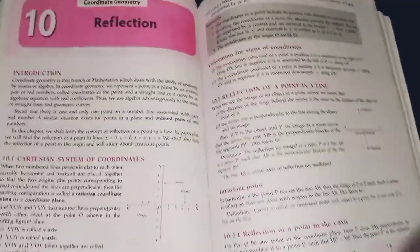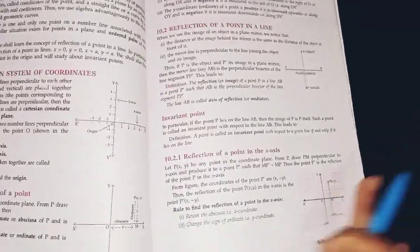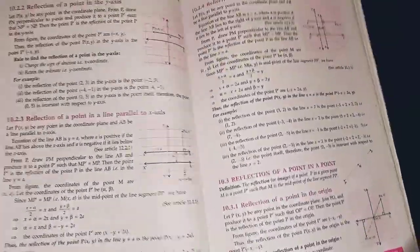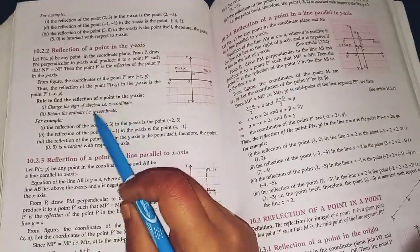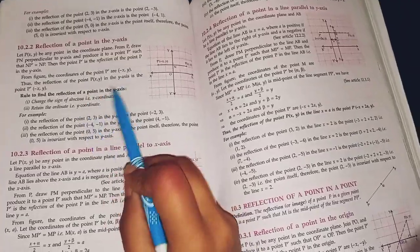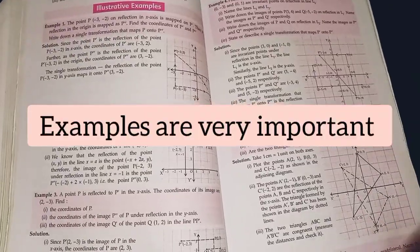Measures of central tendency will take two days and probability will hardly take one day. Now, in this part, reflection, you have to do all the topics. Everything is in syllabus and after you learn all these formulas and the rule to find reflection of point in x-axis, y-axis or origin, then you'll move on to the examples. Examples are very important. Please do not neglect them.